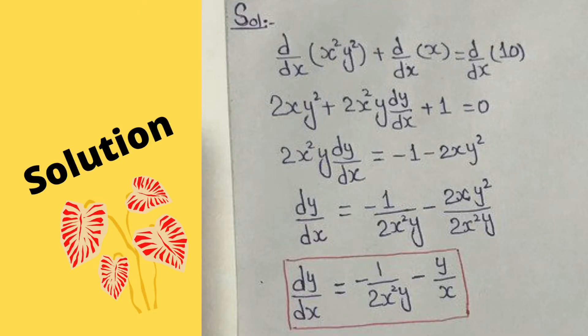You can see that for the expression x²y², we use the product rule. The derivative of x with respect to x is 1, and for the constant, the derivative is 0. We have to find dy/dx, so we move all other terms to the right side and we find the exact answer.